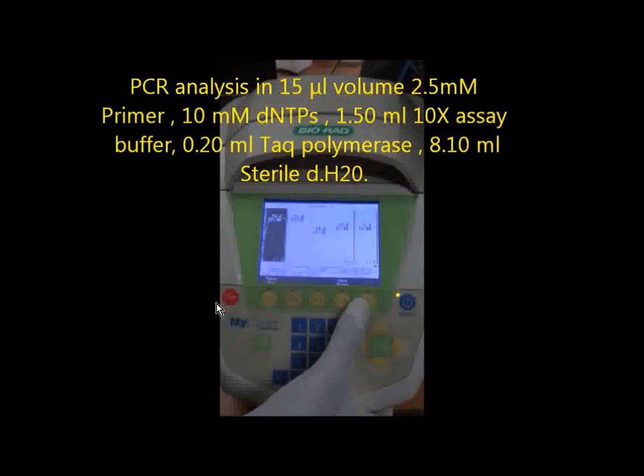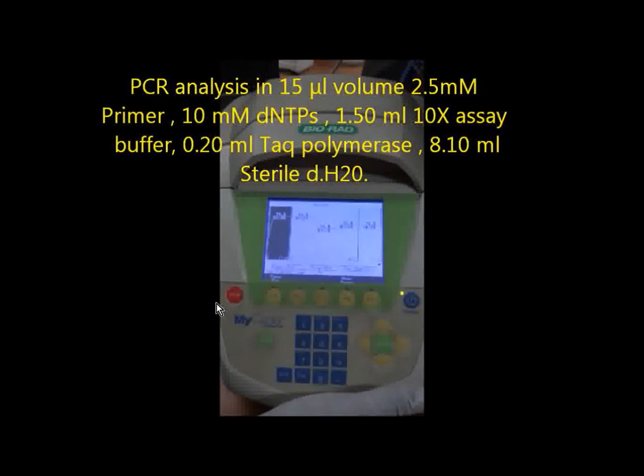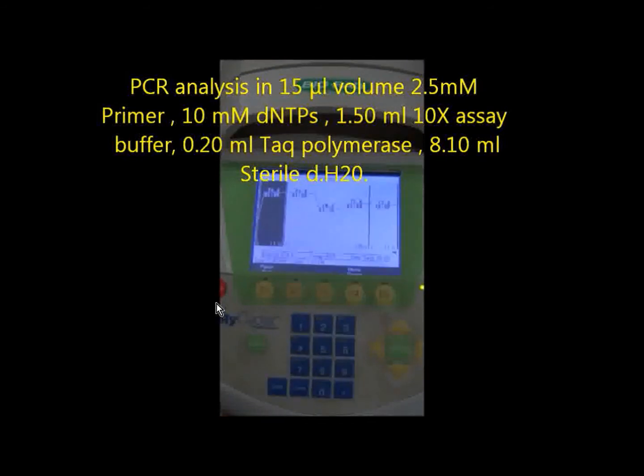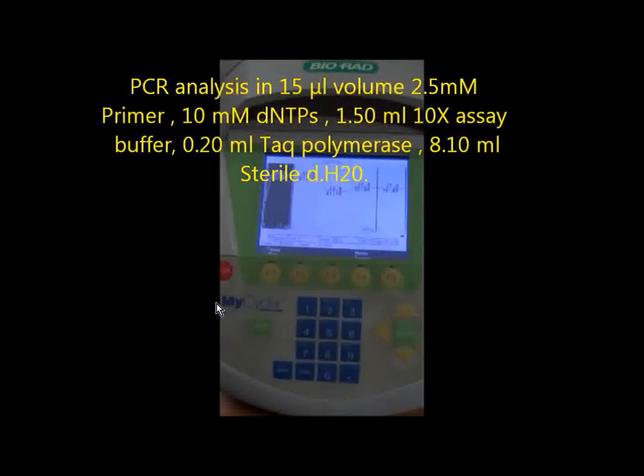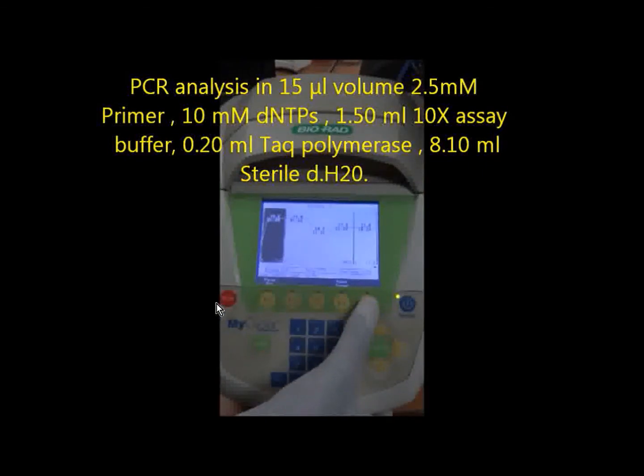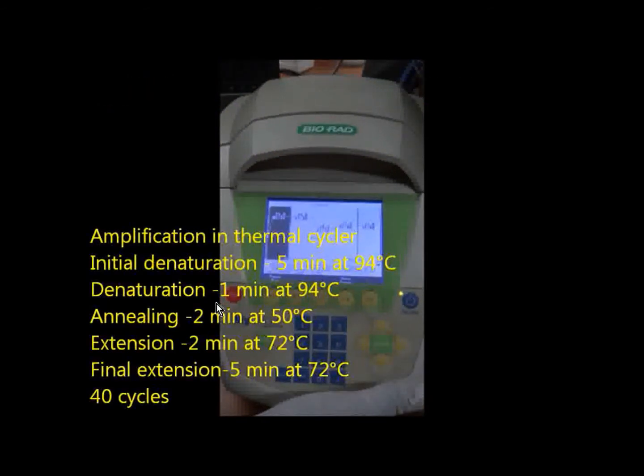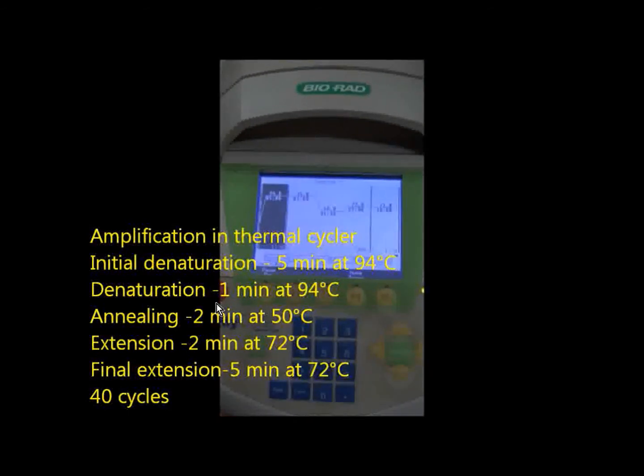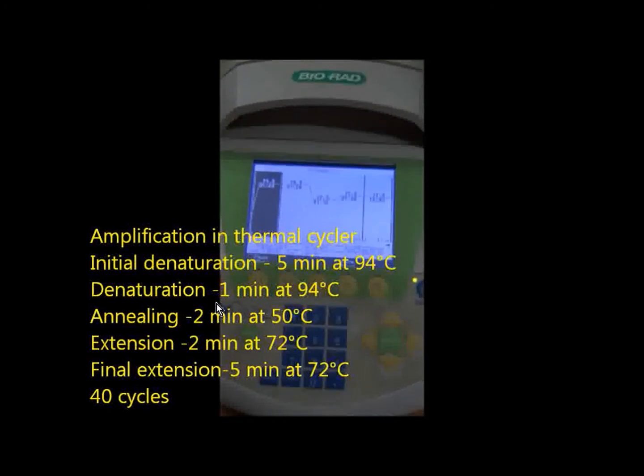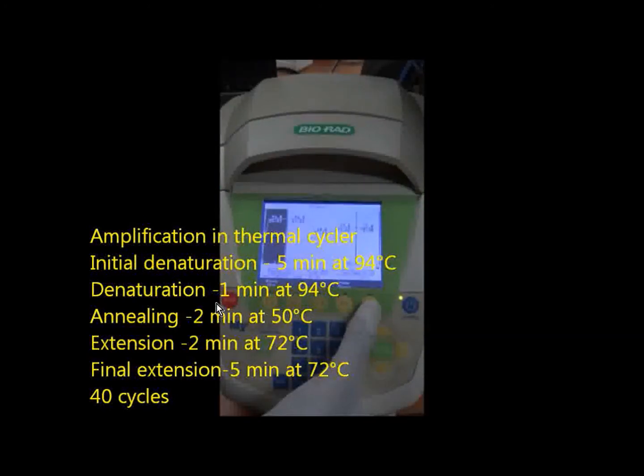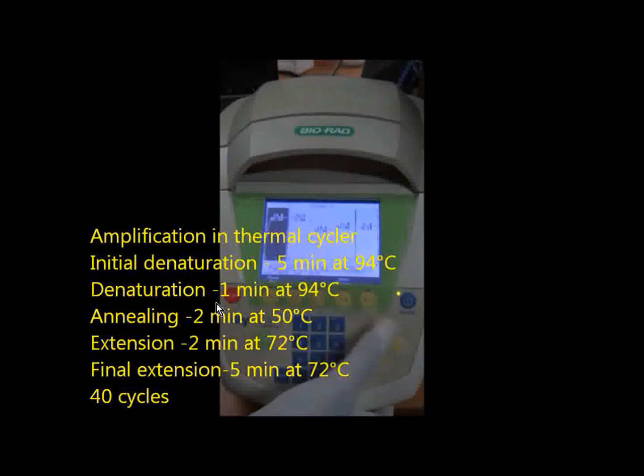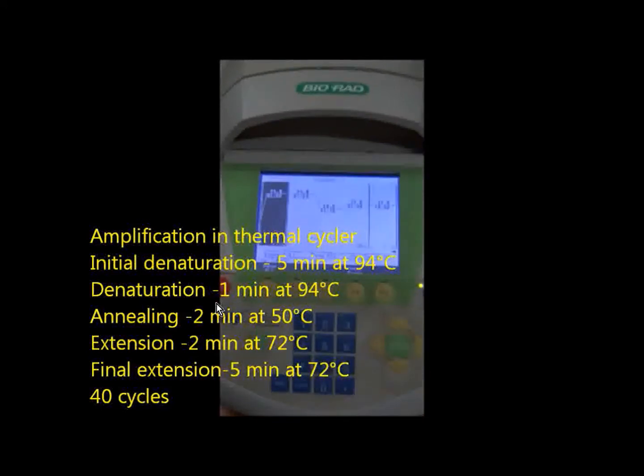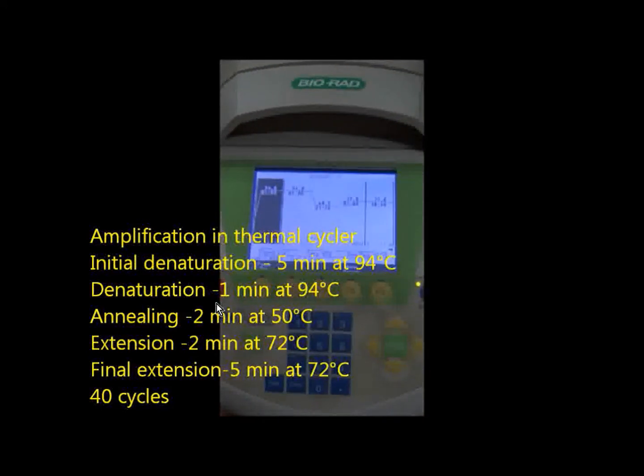The PCR analysis is carried out in fifteen microliter volume: 2.5 millimolar primer, 10 millimolar dNTPs, 1.5 ml of 10x assay buffer, 0.2 ml of Taq polymerase, and 8.1 ml of sterile distilled water. The amplification is carried out in thermocycler where the initial denaturation is programmed for 5 minutes at 94 degrees C, denaturation for 1 minute at 94 degrees C, annealing for 2 minutes at 50 degrees C, extension for 2 minutes at 72 degrees C, and final extension for 5 minutes at 72 degrees C, carried out up to 40 cycles.